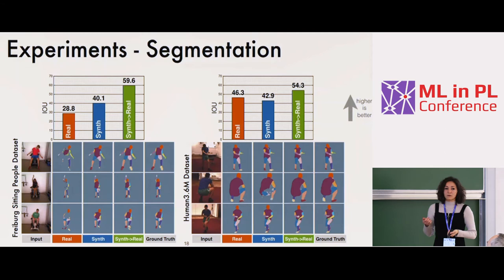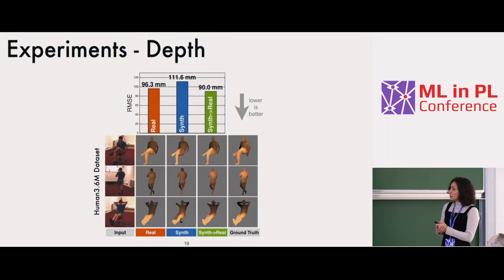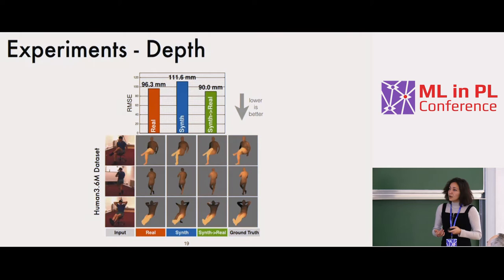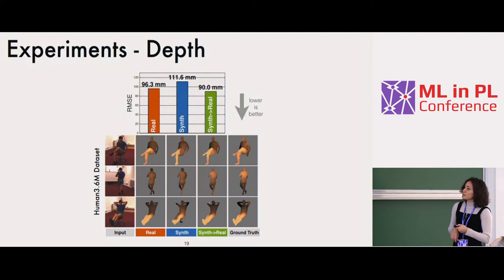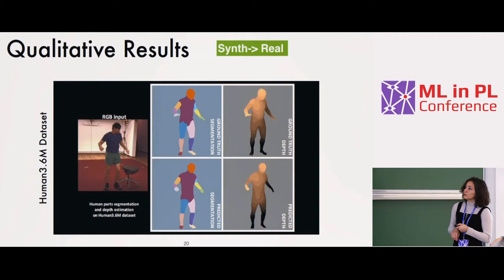We were really happy when we first got these results. We also applied it to depth estimation — assigning every pixel a distance in meters from the camera, like a Kinect but without any depth sensor, just from RGB cameras. Similarly, lower is better, and we get better results when we initialize with synthetic and fine-tune on real. Depth tends to be more difficult than the segmentation task, but synthetic-to-real was closer to the ground truth.